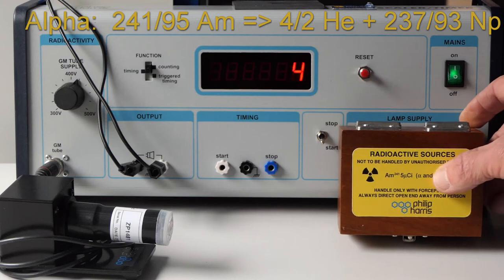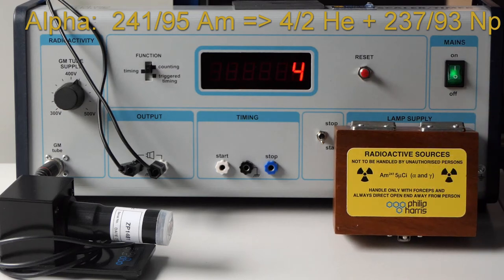We'll start by looking at alpha radiation. The sources I'm using contain just a few milligrams of a solid insoluble radioactive element inside a stainless steel container.